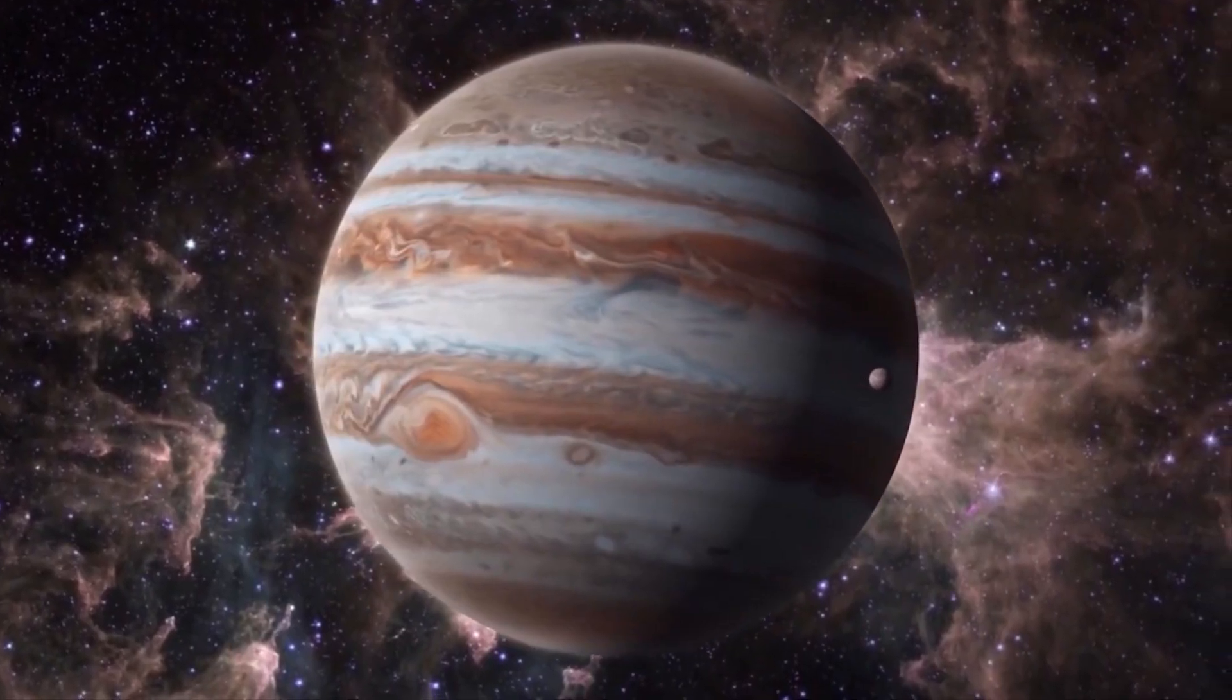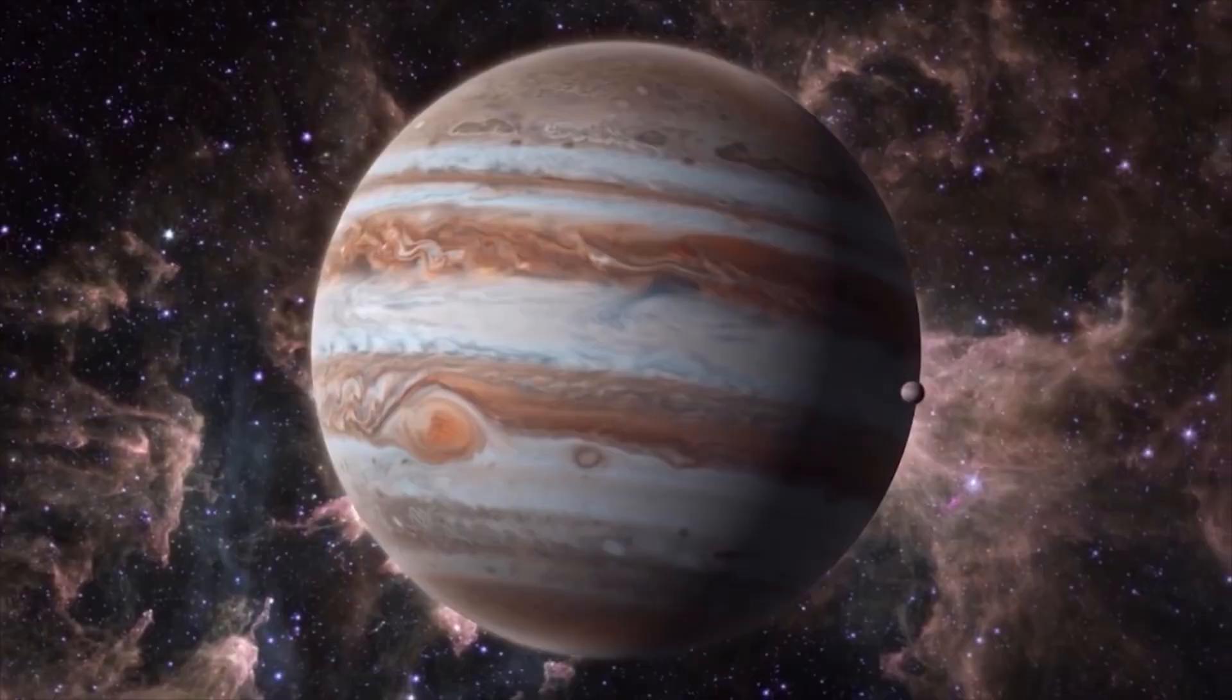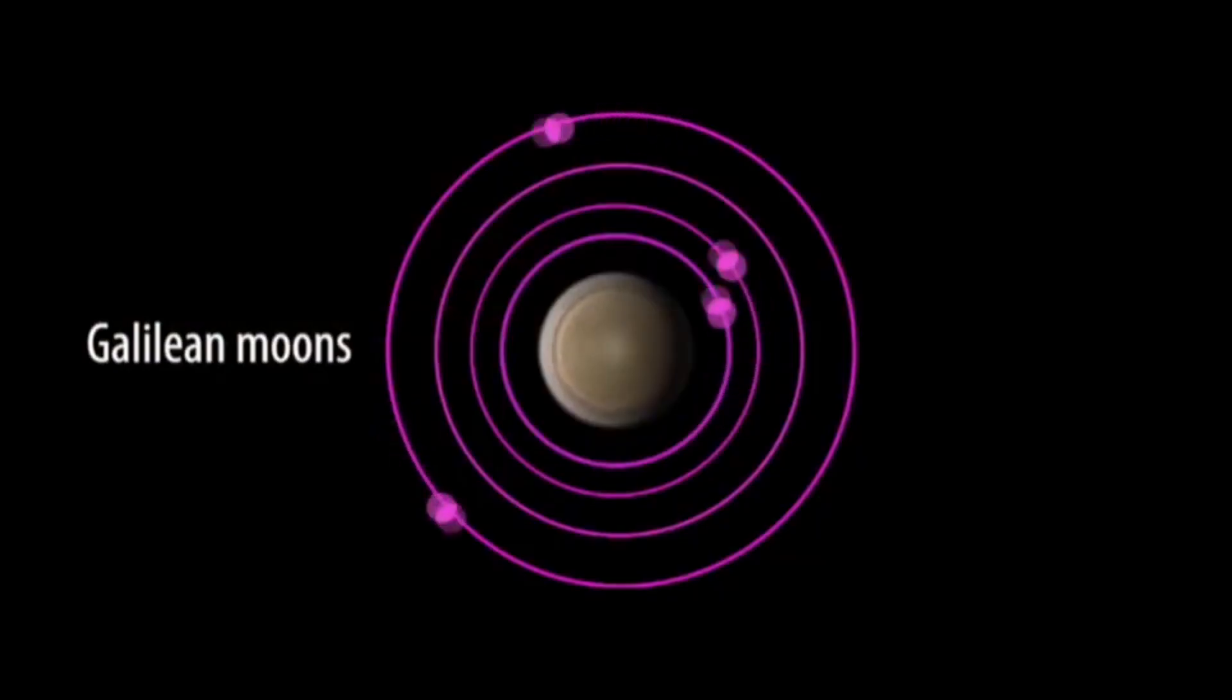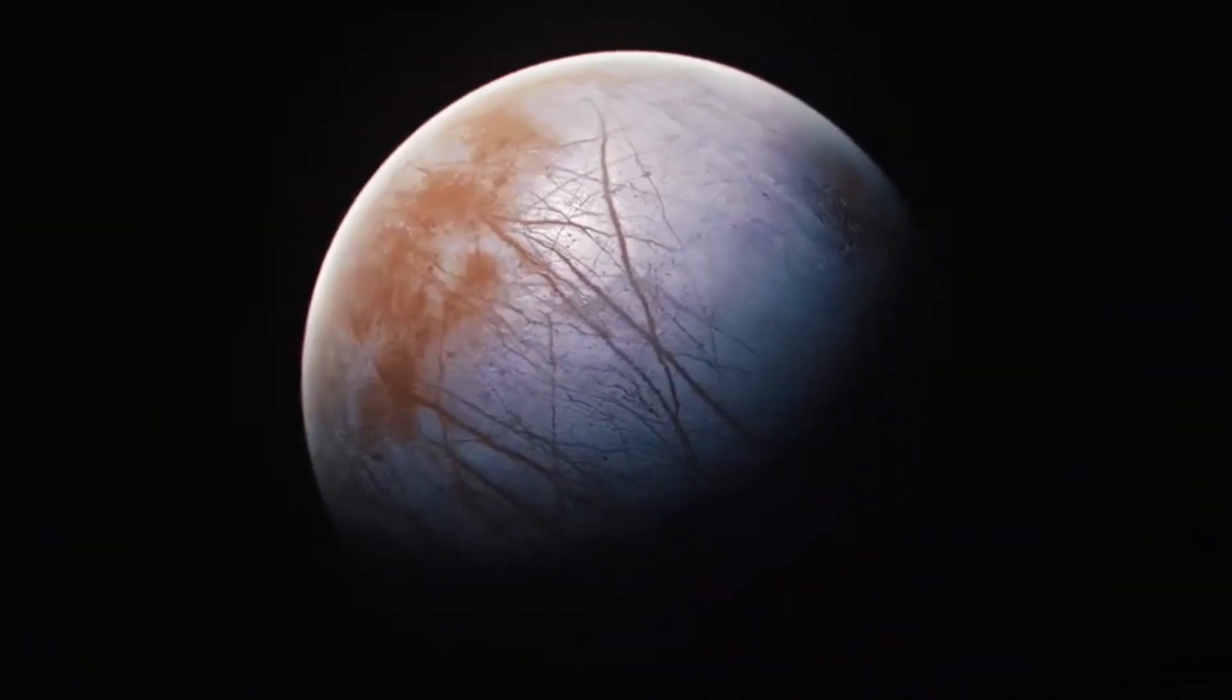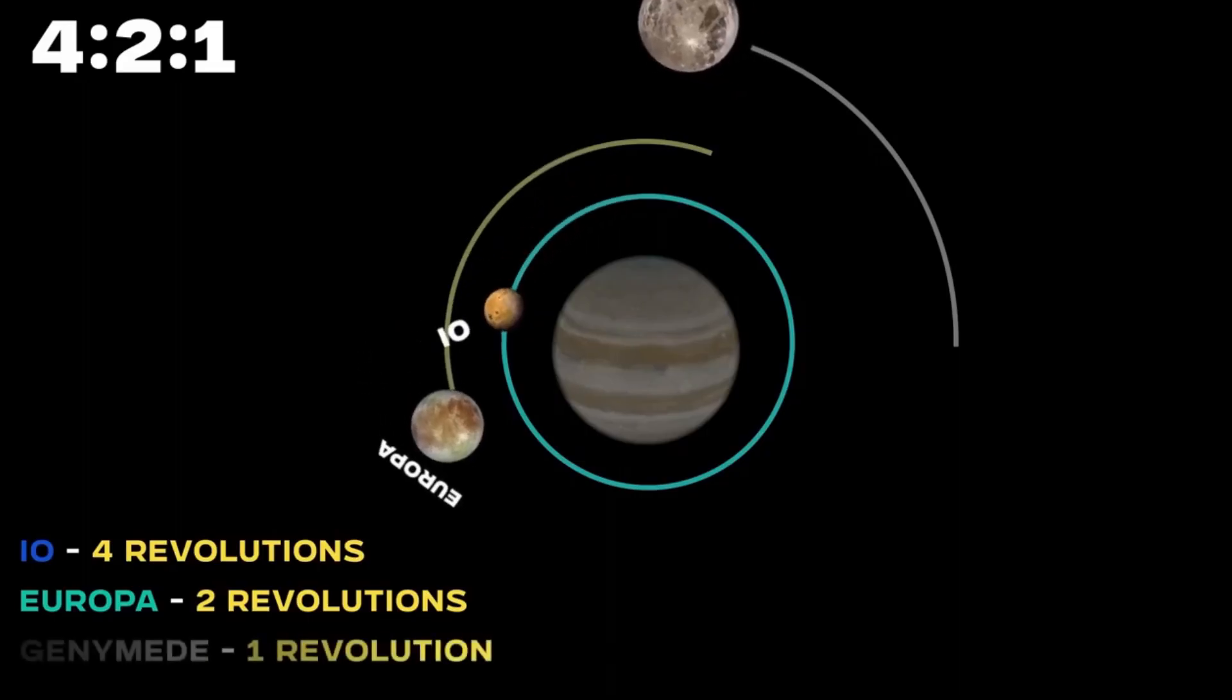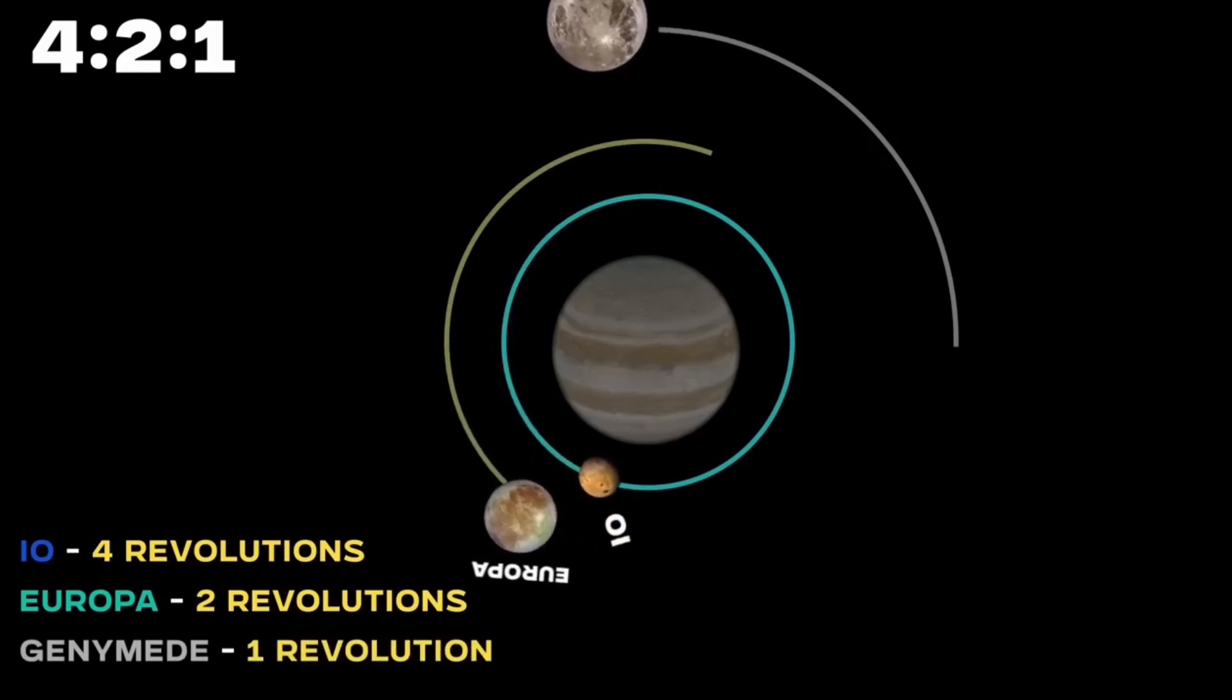As it is commonly known that Jupiter is too inhospitable for the sustainability of life, however, its moons may not be. The gas giant is surrounded by a vast number of icy moons, with Europa, Ganymede, and Callisto being the biggest and most well known.